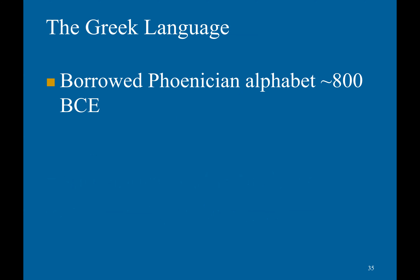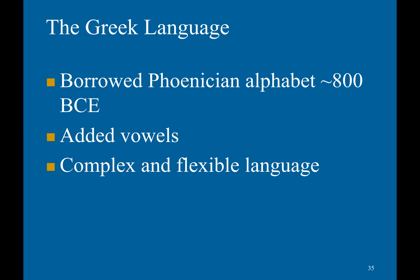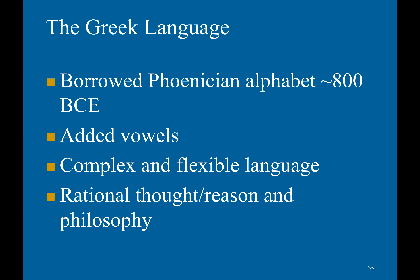The Greeks borrowed the Phoenician alphabet around 800 BCE and added vowels, which allowed for a complex and flexible language. As a result, you get the spread of rational thought, reasoning, and philosophy.